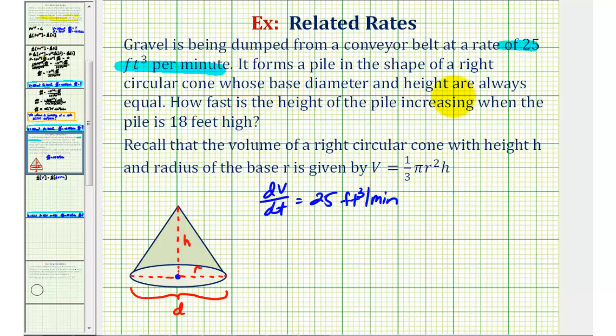Next, the diameter and height are always the same, and we're told the height is equal to 18 feet. So if H equals 18 feet, we know the diameter is equal to 18 feet.